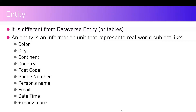An entity represents a real world subject — for example, city, color, continent, country. When you say Australia, UK, USA, or America, the copilot should understand you're referring to a country. If you write 'I live in Australia,' it will pick up the country entity. You can write 'I live in Australia,' 'I work in Australia,' or 'I love Australia,' and the copilot will successfully extract that specific data type.